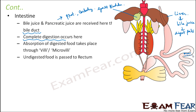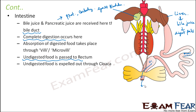Not all food gets digested — some portion remains undigested. This undigested food passes to the rectum and is then expelled outside through the cloaca. Cloaca functions similarly to the anus in humans, helping to excrete waste material to the outside.